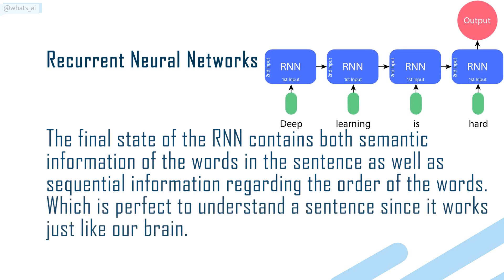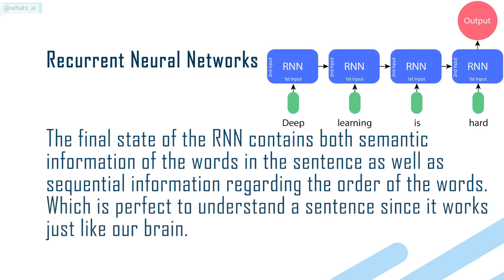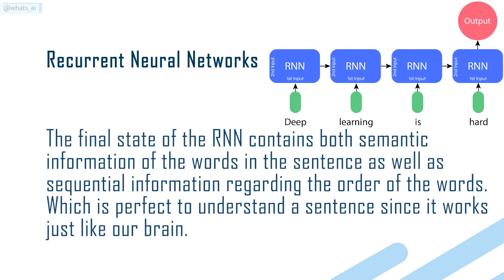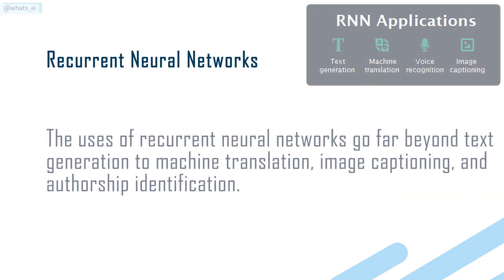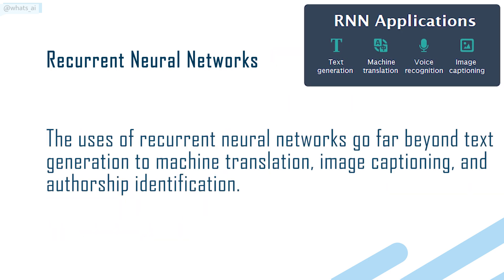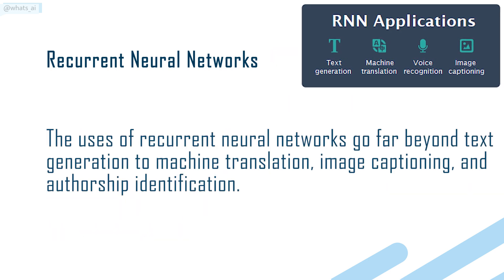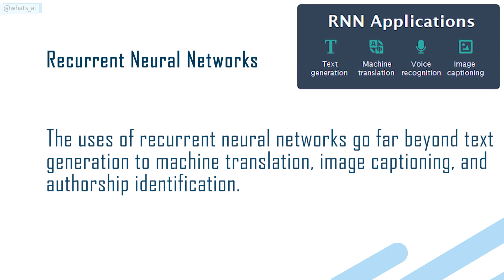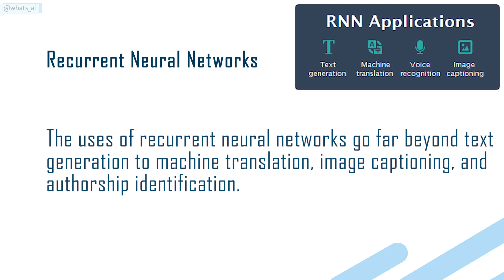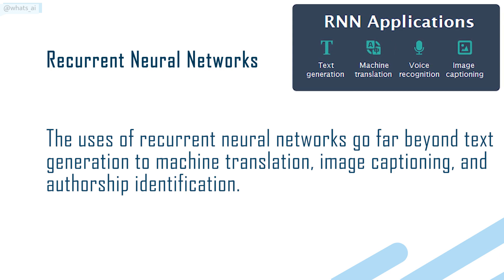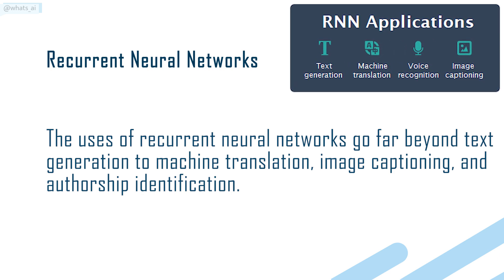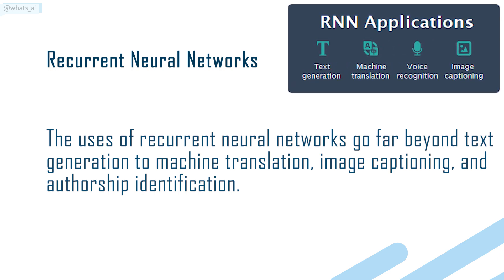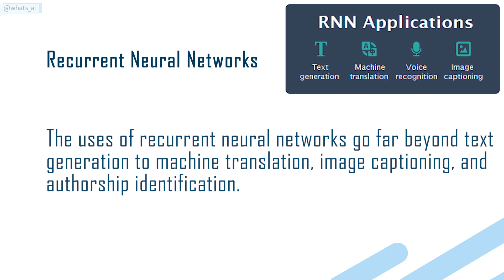Which is perfect to understand a sentence since it works just like our brain. The uses of recurrent neural networks go far beyond text generation to machine translation, image captioning, and authorship identification.